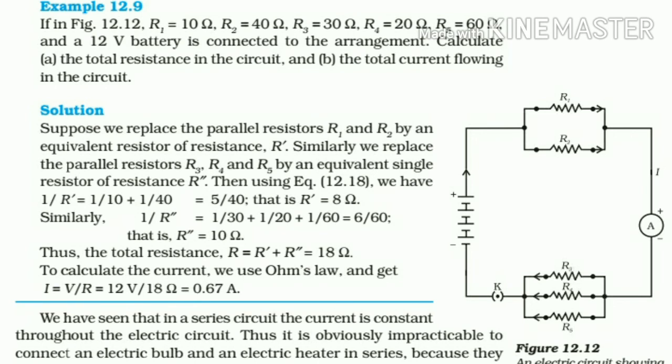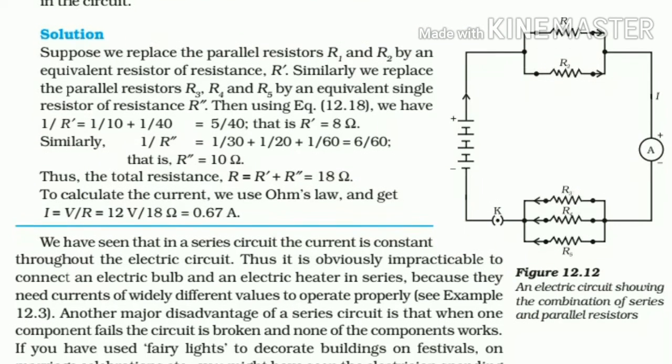Now they're in series. 8 plus 10 equals 18 ohm. For the current, V by R equals 12 by 18 equals 0.67 ampere.